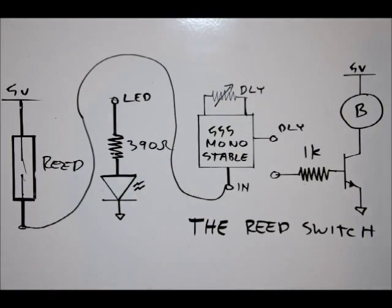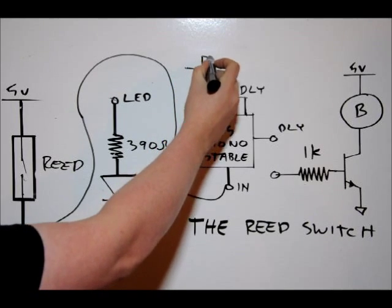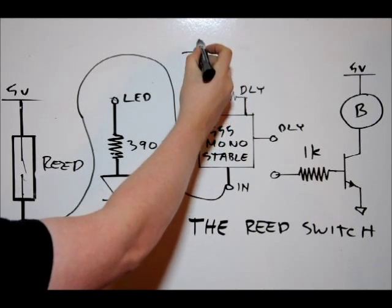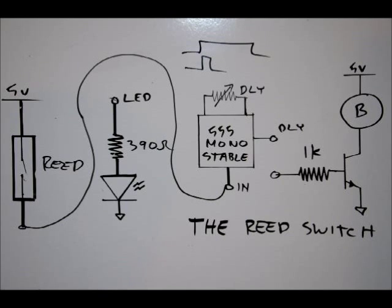We can tune the output to have a short pulse width or a long pulse width using our DLY potentiometer, our variable resistor.